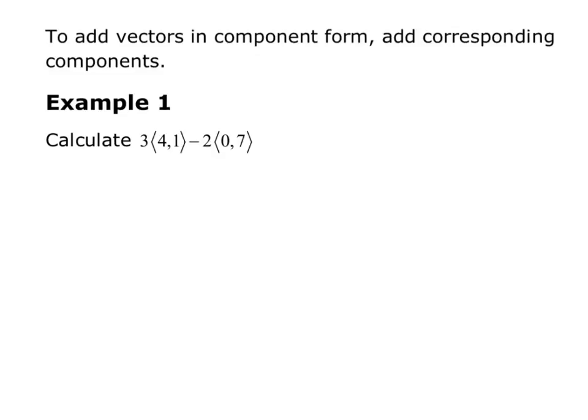To add vectors in component form, we add the corresponding components, meaning you'd add the x components together and you'd add the y components together separately. So in example 1, we want to calculate 3 times the vector (4, 1) minus 2 times the vector (0, 7). So these are vectors in R2, or two dimensions, and the first thing I want to do is distribute the 3 to the 4 and the 1 and distribute the 2 to the 0 and the 7. So that gives me vector (12, 3), so I did 3 times 4 to get the 12, 3 times 1 to get the 3, minus vector (0, 14). So I distributed the 2 to multiply by the 0 and then by the 7.